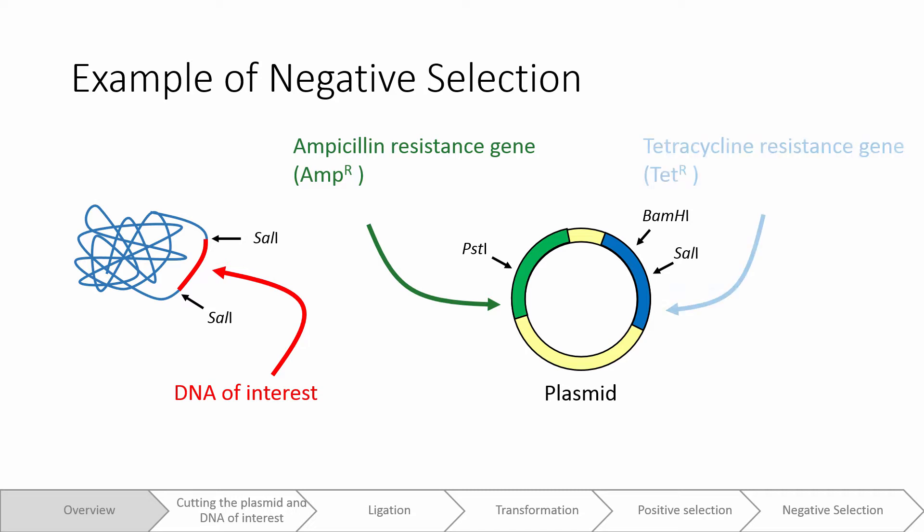and the other is the tetracycline resistance gene, which allows E. coli to survive in the presence of tetracycline. Both antibiotics will normally kill an E. coli cell. We also have restriction enzyme recognition sites where noted.